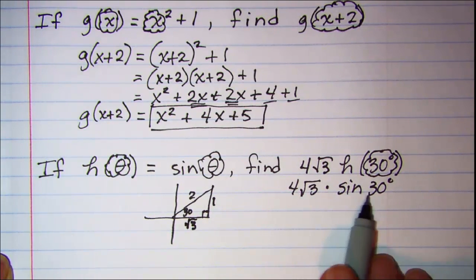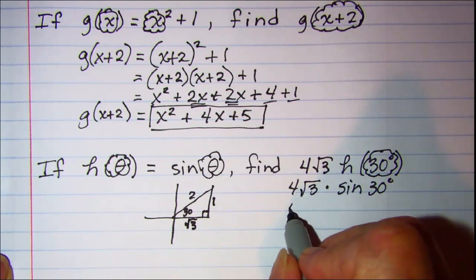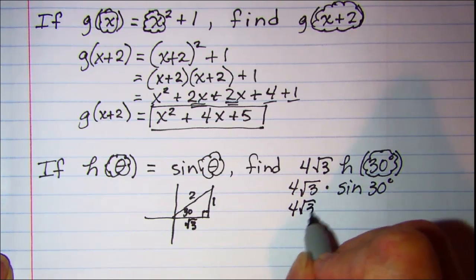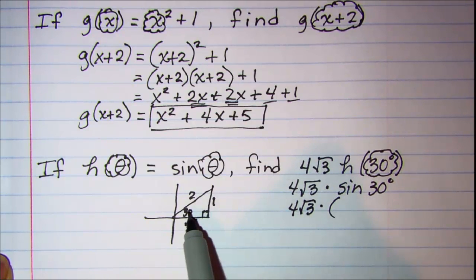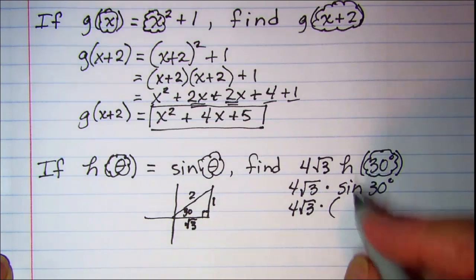So this expression then is 4√3 times, and then the sine of 30 is opposite over hypotenuse, so 1 over 2.